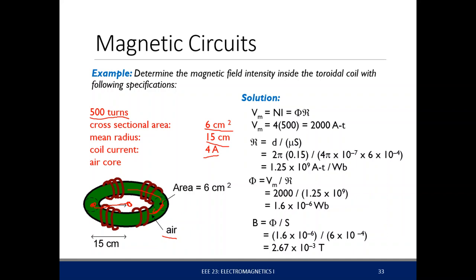To solve for the magnetic field intensity, first we need to solve for other parameters. The magnetic field intensity can be solved from the magnetic flux density B; but to solve for B, we need the flux. The flux can be solved by dividing the magnetic potential by the reluctance, but we don't know both — so how do we find them?